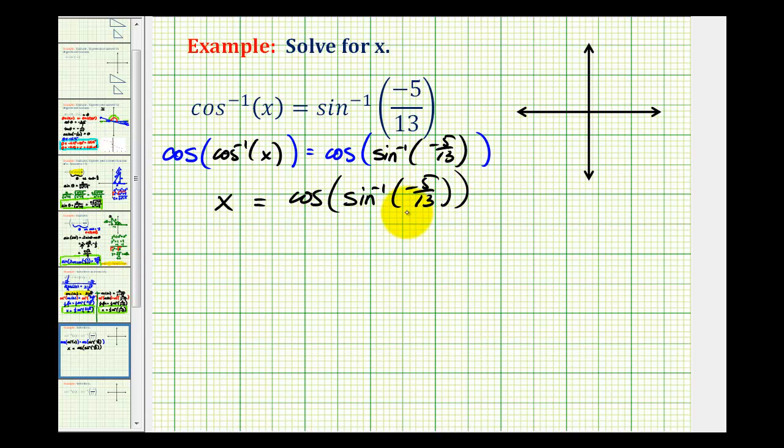Looking at the right side of the equation, we'll start with the inner inverse trig function. sin⁻¹(-5/13) is equal to some angle θ, such that sin(θ) = -5/13.